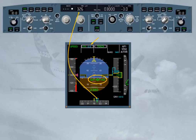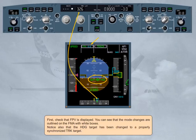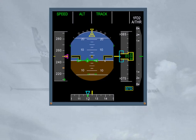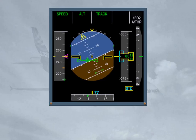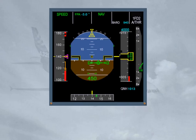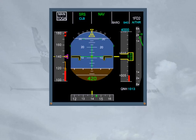Notice also that the heading target has been changed to a properly synchronized track target. Let's see an example of a manual track change. We will concentrate on the PFD. When flying manually, the objective is to center and align the flight path vector on the FPD. We will turn on to a track of 140. The FPD commands a roll to turn on to the selected track. The aircraft is rolled until the flight path vector and FPD are aligned. Approaching track 140, the FPD demands a roll to level the wings. When in track flight path angle, the FPD reverts to flight director bars in case of go-around. You will practice the use of the flight path vector and the FPD in the simulator.